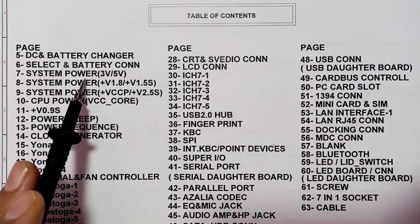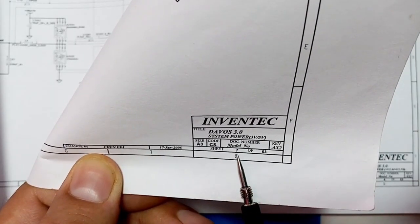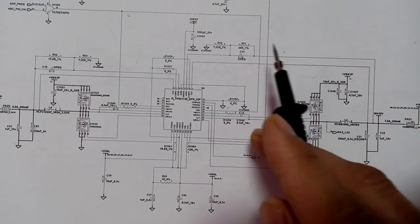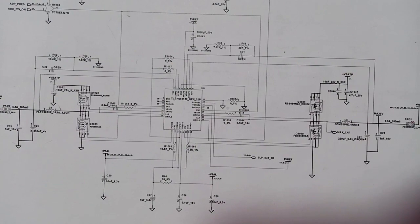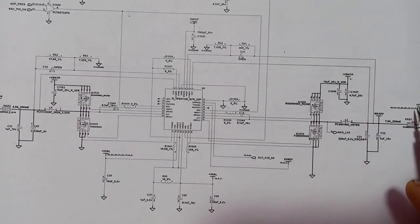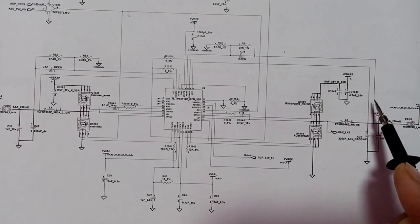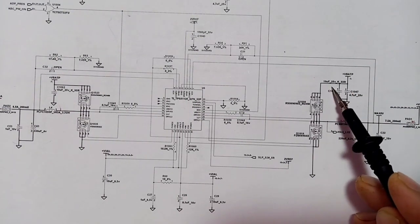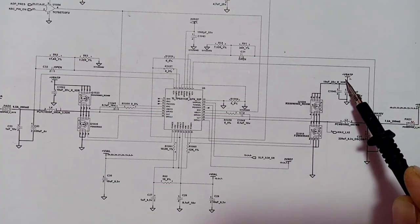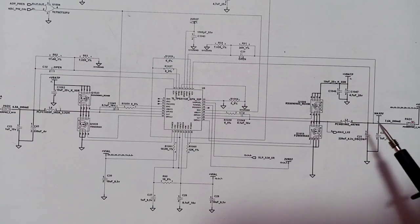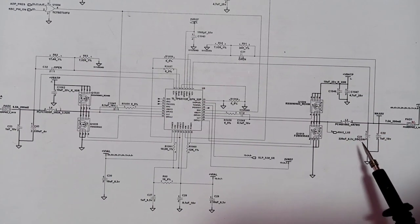Going to page 7, we have the system power 3 volt and 5 volt circuit. Here we have a control IC and a 5 volt channel. In every channel you will find MOSFETs and ceramic capacitors at the input. The input voltage is about 19 volts, and there is an inductor whose purpose is to increase the current for the circuit.